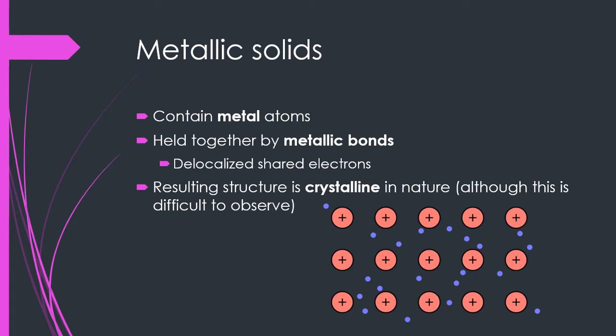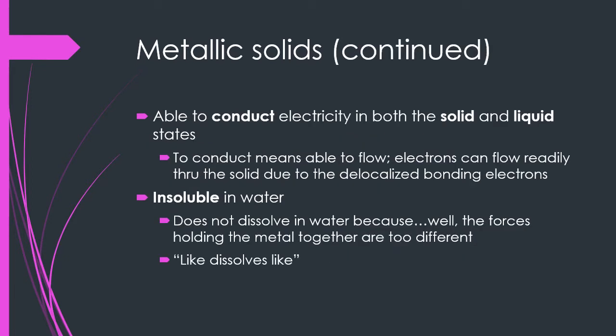This results in a crystalline structure where electrons are very free to move, although it's quite difficult to see the crystalline structure due to what metals generally look like to the human eye. Metals are also able to conduct electricity, both in their solid and liquid states. Since the electrons are delocalized and naturally freely moving, allowing electrons to flow to conduct electricity is very easy to accomplish.